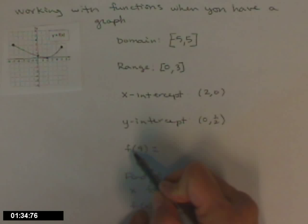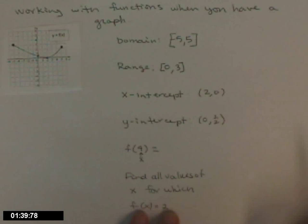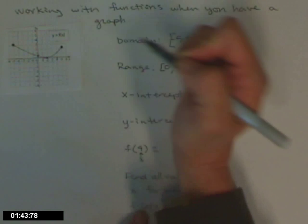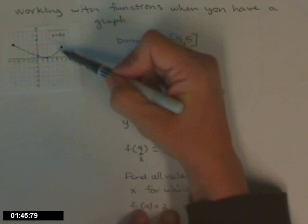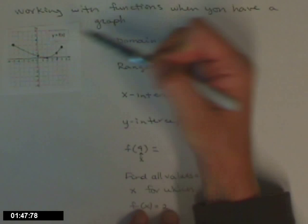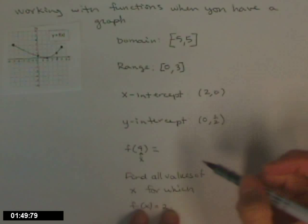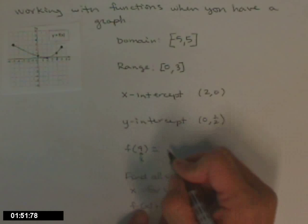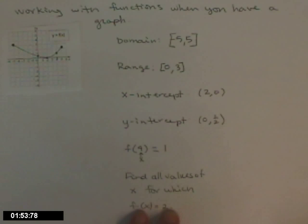This next one, f of 4, this 4 is the x value, so I need to go to where x equals 4, right here. Get on the graph, so jump up until you're on the graph, and then read off that y value. So if x is 4, my function value, my y value is 1.